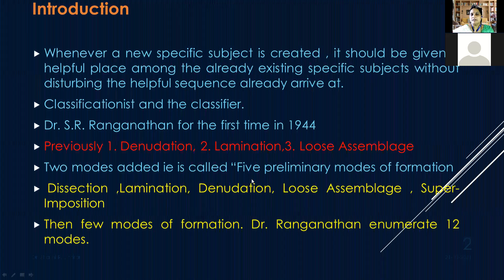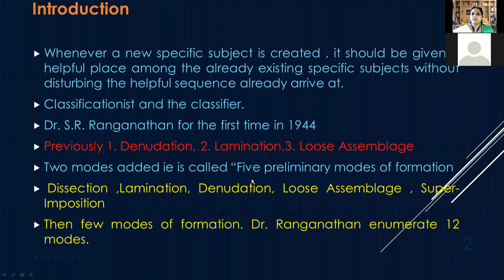Initially, he identified three modes: denudation, lamination, and loose assemblage. After one decade, he also added two more modes — dissection and denudation — making a total of five preliminary modes of formation of subject.